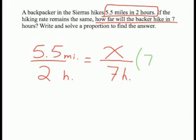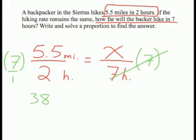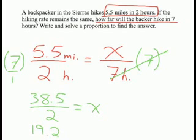Since we're trying to solve for x, we must undo the division by multiplying both sides by 7. On the right side, the 7 hours cancel each other out and we're left with x. On the left side, we're multiplying 7 times 5.5 over 2. We make 7 a fraction, 7 over 1, and multiply straight across the top. 7 times 5.5 is 38.5, and 1 times 2 is 2. 38.5 divided by 2 is 19.25 miles. So the backpacker will hike 19.25 miles in 7 hours.